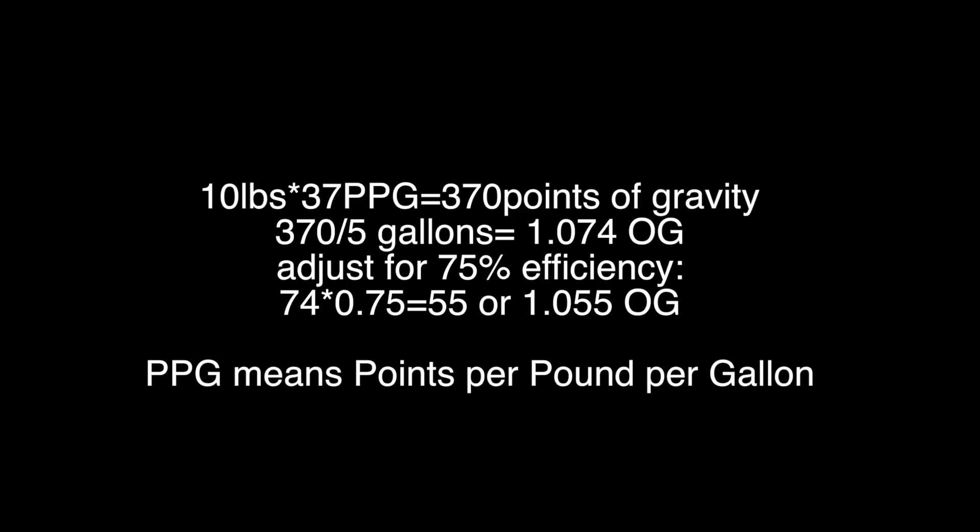In the future we can do a video of actually working with PPG and how you calculate this. In general, one pound of malt gives you 37 points of gravity per gallon. So you've got 10 pounds times 37 — that's 370 points divided by five gallons — which is going to be a 1074 OG, but you haven't adjusted for efficiency. So you have to multiply the 74 points by your percent efficiency. At 70%, that's back to about a 1050 — so that's where it comes from.